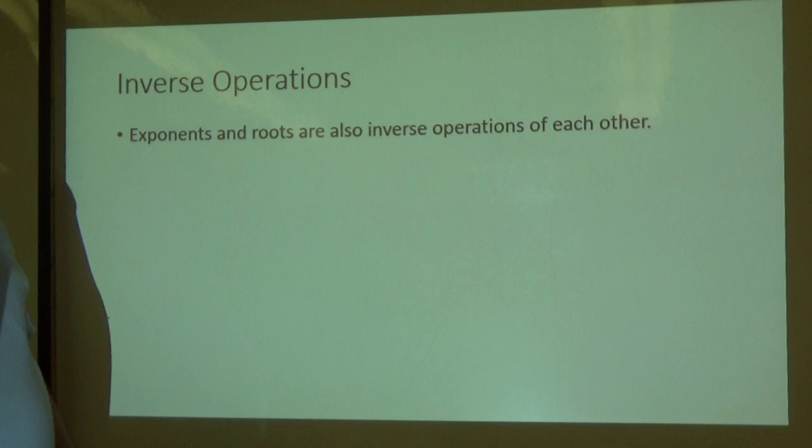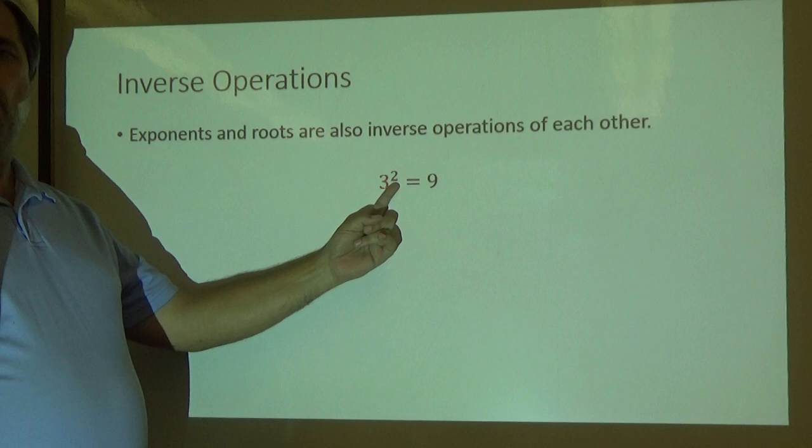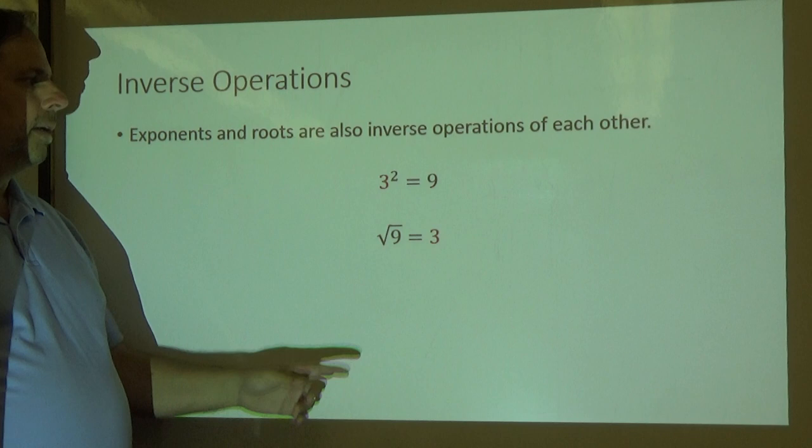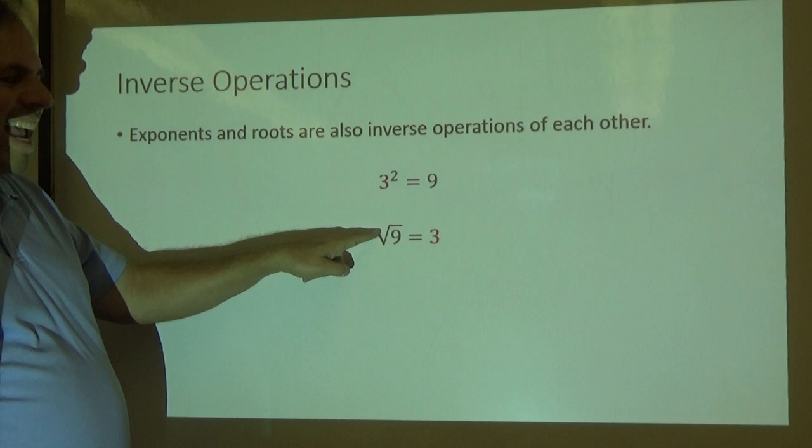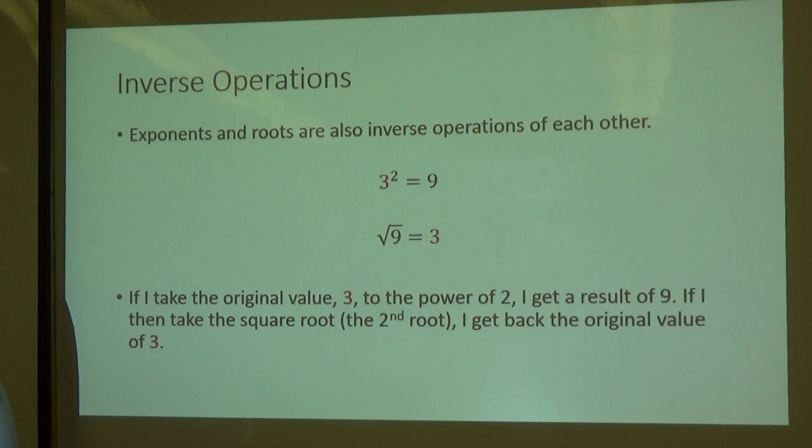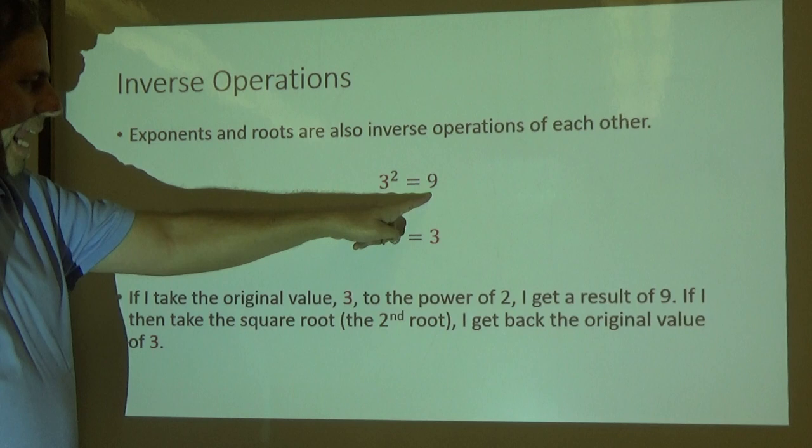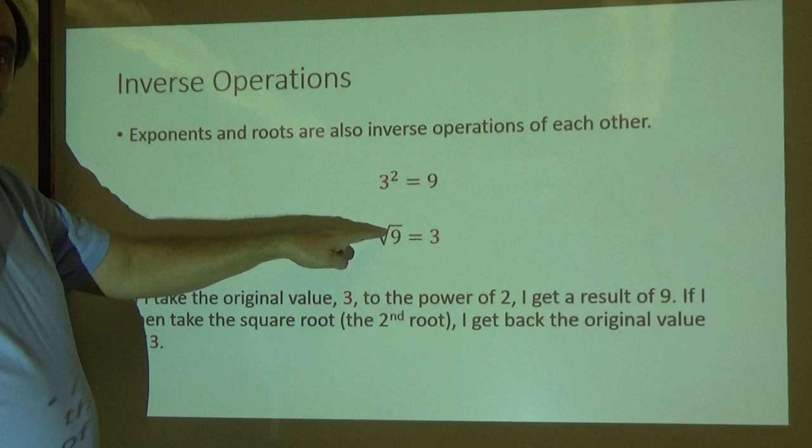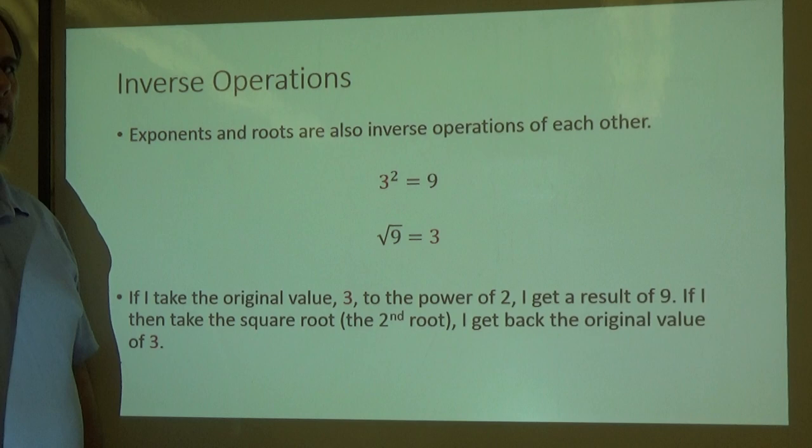Exponents and roots are inverse operations of each other as well. If I take three and I square it, take it to the second power, I get nine. And then if I take that number nine and take the square root, square root means the second root, it's like there's an invisible two here. The square root of nine gives me three. I get back to where I started. Take the original value of three to the power of two, and I get nine. I take that nine, then, and square root it, which is like doing the second power, or second root of nine. I get back to my original value of three.